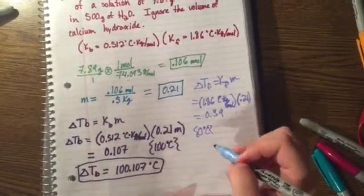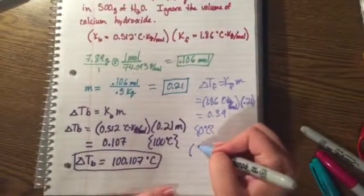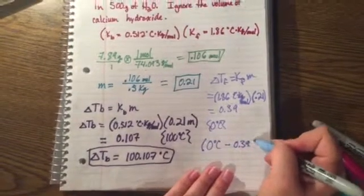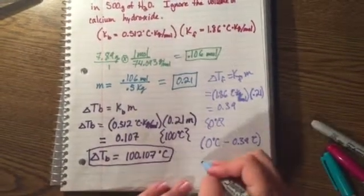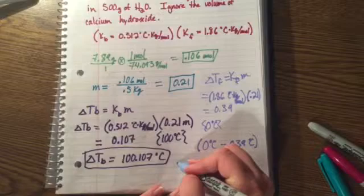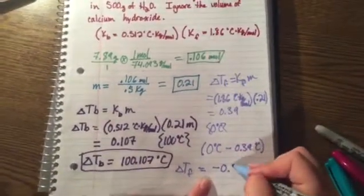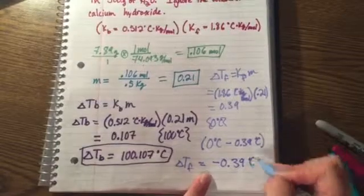This time we're going to subtract. We have 0 degrees Celsius minus 0.39 degrees Celsius. This gives us our normal freezing point of negative 0.39 degrees Celsius.